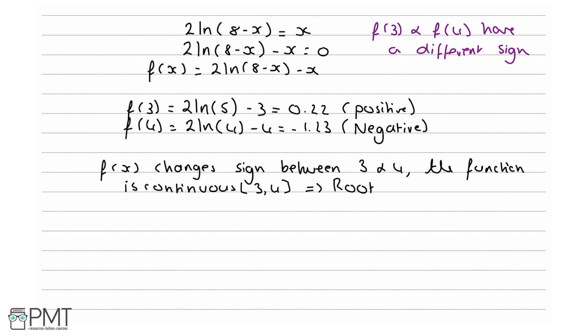These two conditions mean that there is a root. This question is worth two marks. Your first mark comes from attempting to find f(3) and f(4) and getting that f(x) equals 2ln(8 - x) minus x. Your next point comes from getting 0.22 and -1.23, and doing your argument—stating explicitly that f(x) changes sign and the function is continuous.